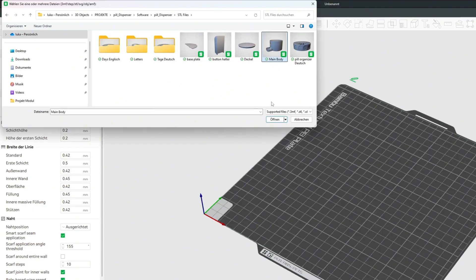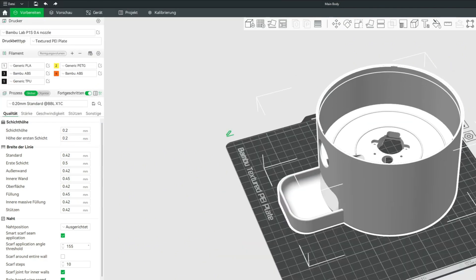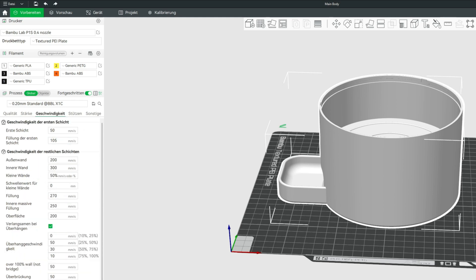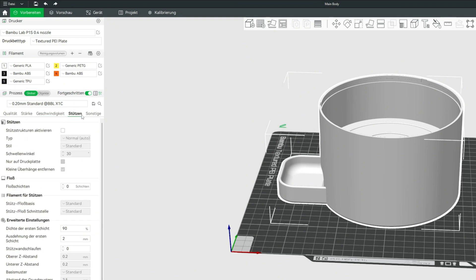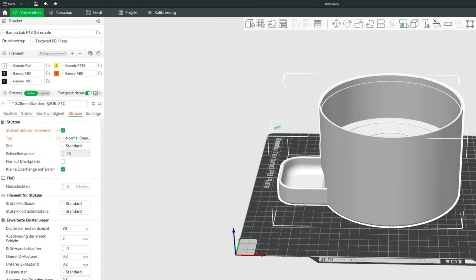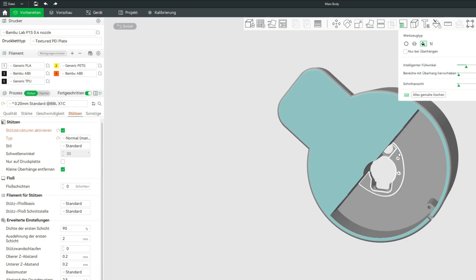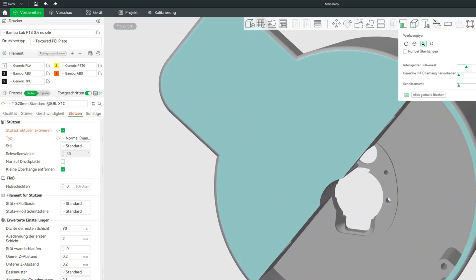I have the body printed with the standard settings of Bamboo Lab. With an infill of 15%, place the supports manually as shown in the instructions to save material. In Bamboo Studio, select supports and set it to manual. Then you can use the small icon above to select the areas that must be supported. The instructions for the complete files and settings is linked down below.